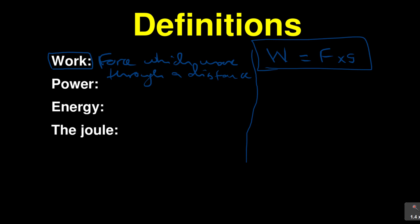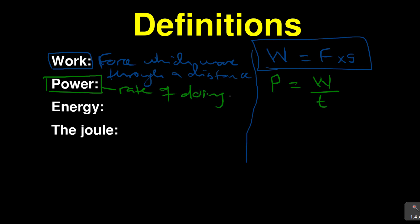Now, what about power? How will you define the word power? Power is defined using the formula P equals W over T. Power is the rate of doing work — that's why it's divided by time.